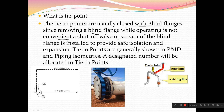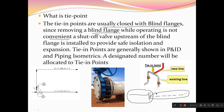It means when I have a main line, if I have a connected flange and a blind flange, from this point my new line is getting started — this is my existing part. A new line gets connected from this point. If I remove the blind flange and connect a new line while flow is on, when I open the blind flange all the flow will come outside.